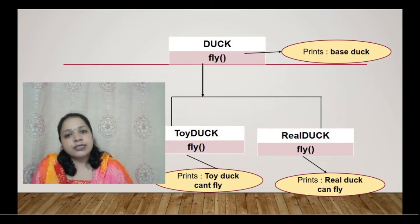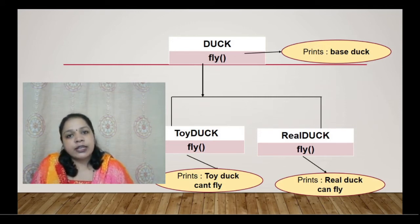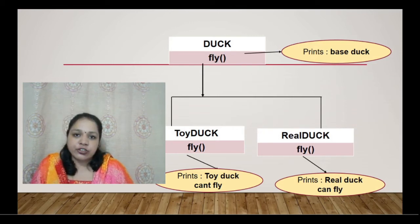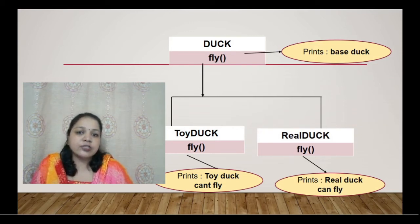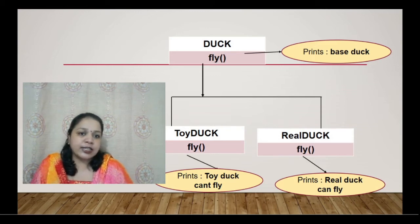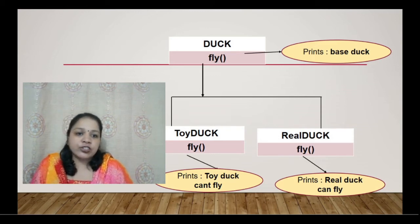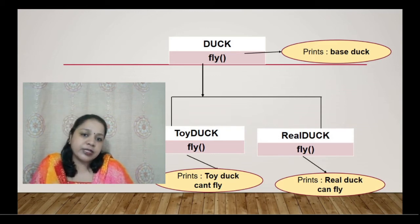So the base class is the Duck class with a fly function. The two derived classes are Toy Duck and Real Duck, both having a fly function but printing different messages.